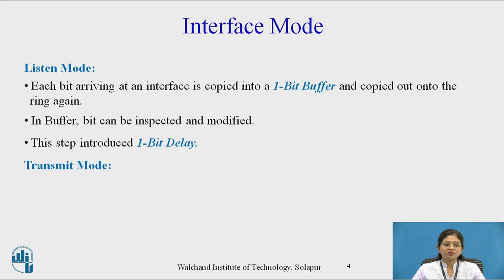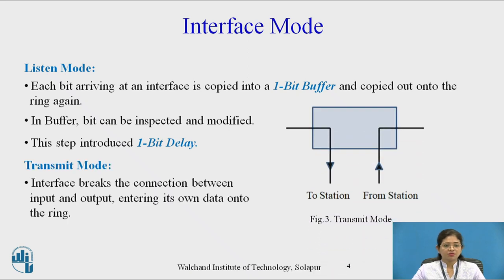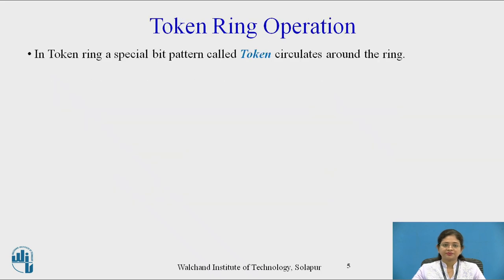The other mode is transmit mode. In this mode, the interface breaks the connection between input and output, entering its own data onto the ring. Now let's see the token ring operation in detail.